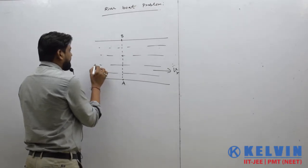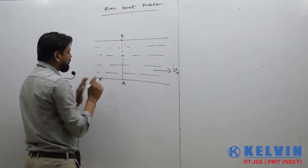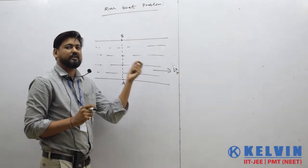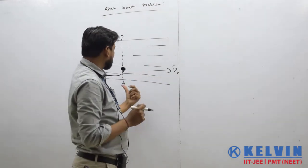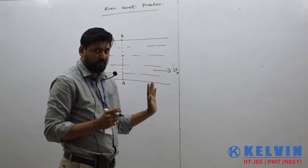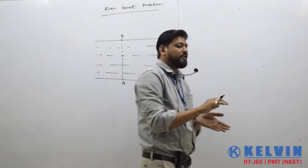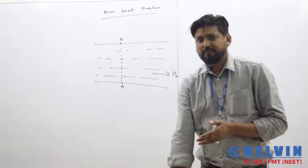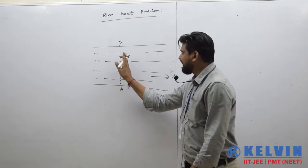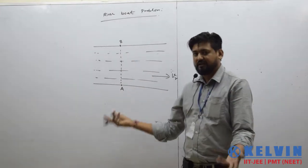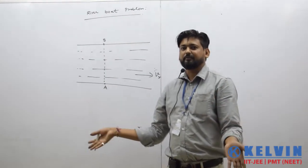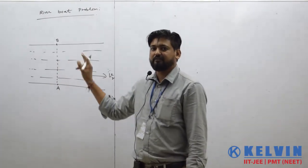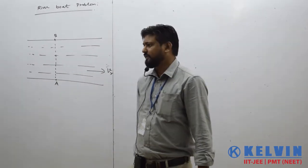An important thing is that when the boatman starts in the river, his velocity is considered with respect to the river, not with respect to the earth. When you are in a certain frame, your velocity should be calculated with respect to that frame. If the boatman is moving on the earth, his velocity would be given with respect to earth. But right now our boatman is moving in the river, so his velocity will be given with respect to the river.